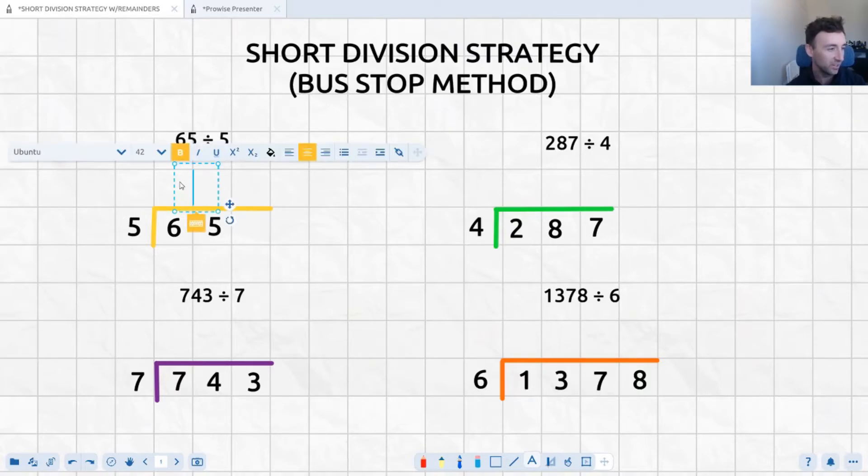So 5 goes into 6 exactly one time with one remainder. So that one remainder again is going to go next to our 5 down there. Now 5 goes into 15 three times, and make sure it's lined up nice and neatly. Again there's no remainders in this one, it's perfectly divisible. 65 divided by 5 is 13.